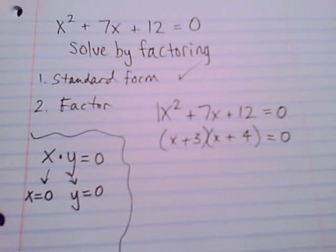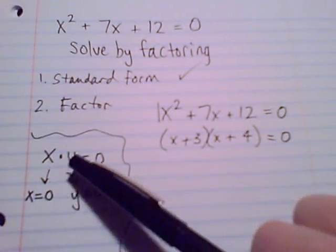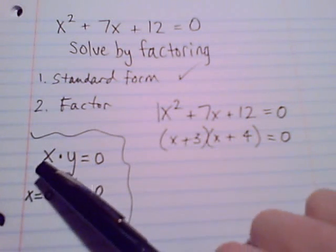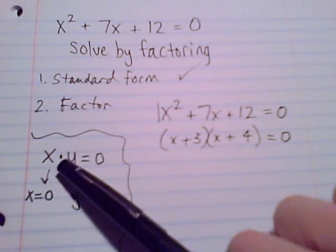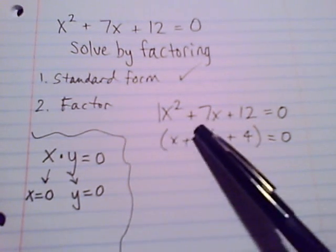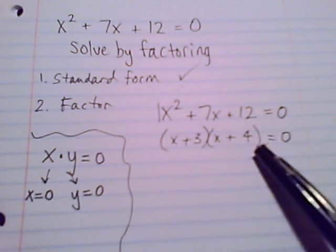The only way you can multiply numbers and have your product equal zero is if one of these numbers has to be zero. It's possible even they both are zero. So this is an idea that we're going to use a lot when we solve by factoring and you'll see it a lot in the future.